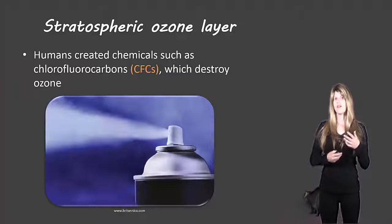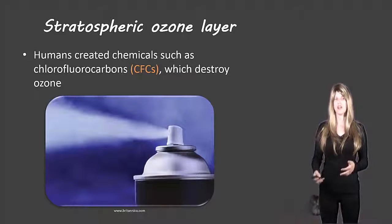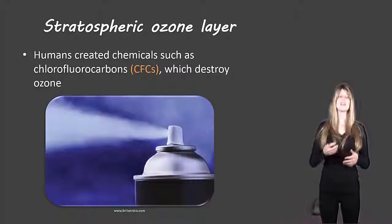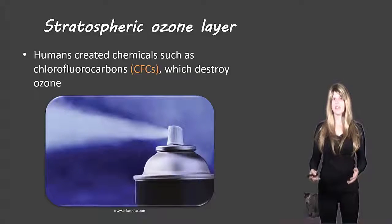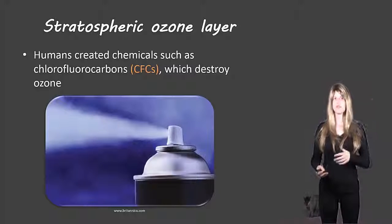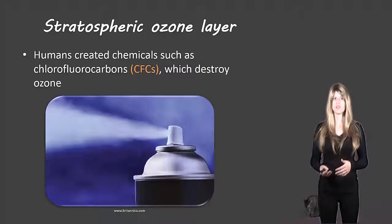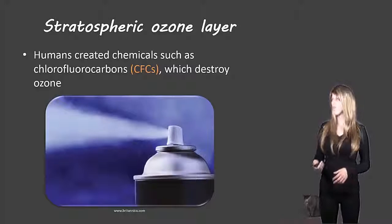So there's something called chlorofluorocarbons and these are negative things, used often in aerosols and things like that, that humans created. They're not natural and when they end up in the ozone layer they can actually destroy the ozone. So when the ozone is being destroyed more UV light is coming towards earth which has a negative impact.